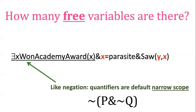And the same goes for this quantifier. If I want this to have wide scope, I would need some parentheses here. As such, it has narrow scope. So it would just operate on this predicate here, won an Academy Award. So this says something won an Academy Award. Now what I'm trying to say is Parasite won an Academy Award and everybody saw Parasite.